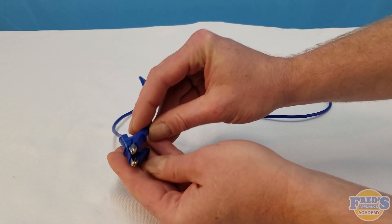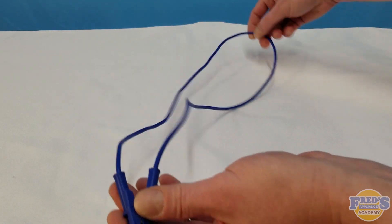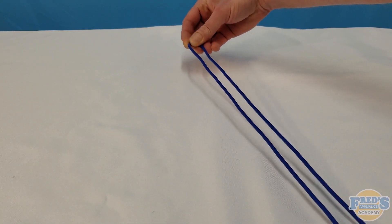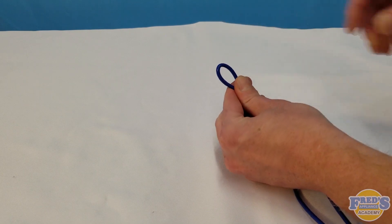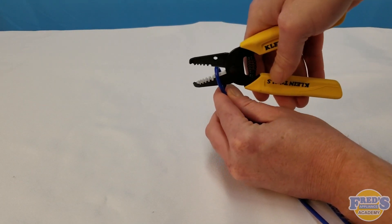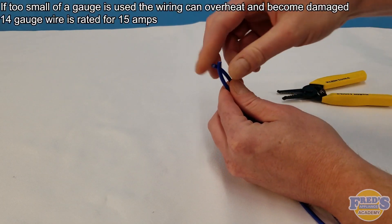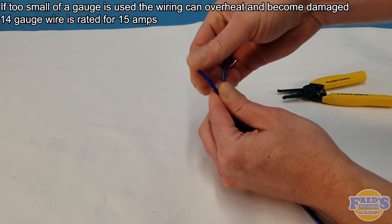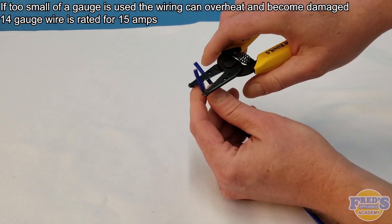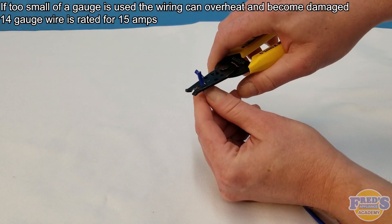First we're going to begin by cutting our alligator leads in half. You can source these alligator leads sometimes from hardware stores but more often the easiest place to find them is going to be Amazon. The gauge wiring you're going to want to use is typically 14 and I wouldn't suggest any lower than 16.